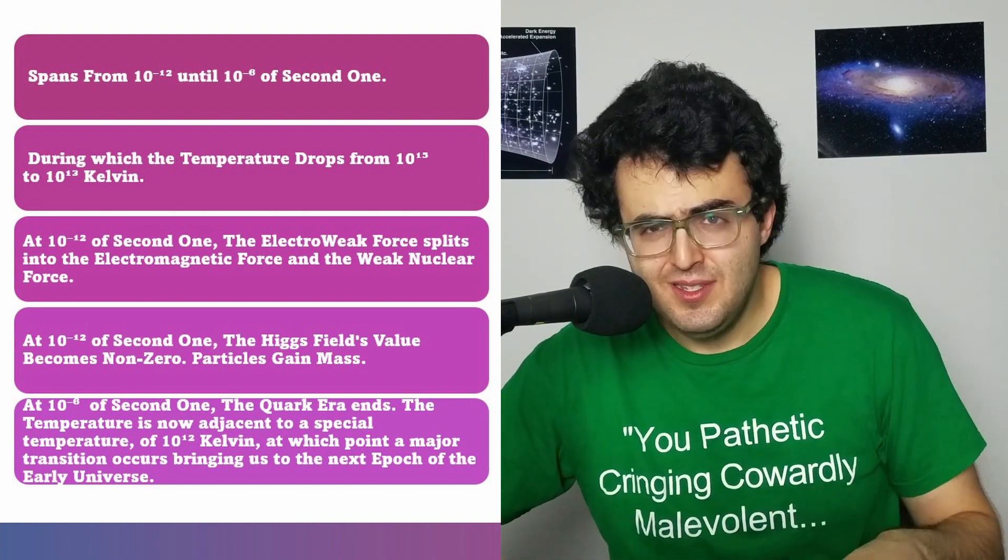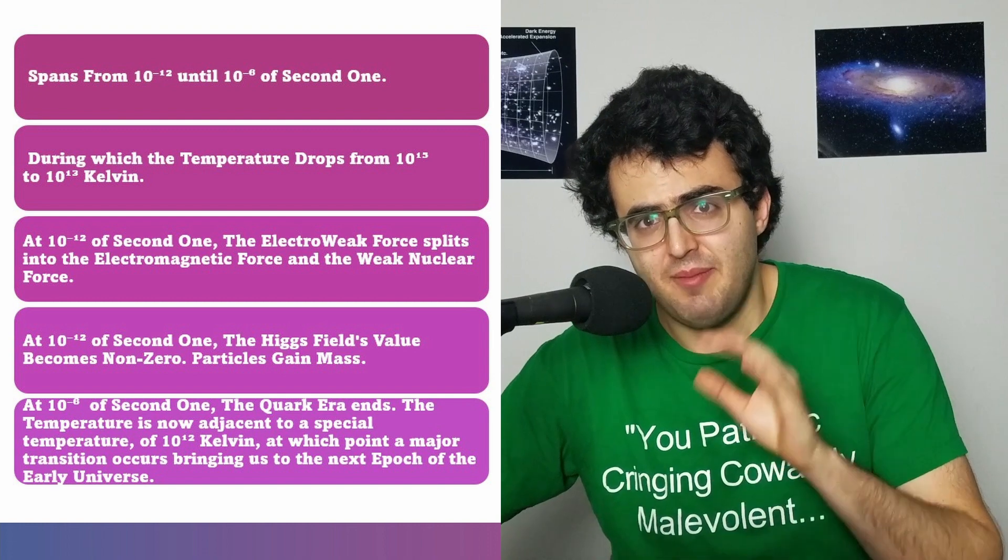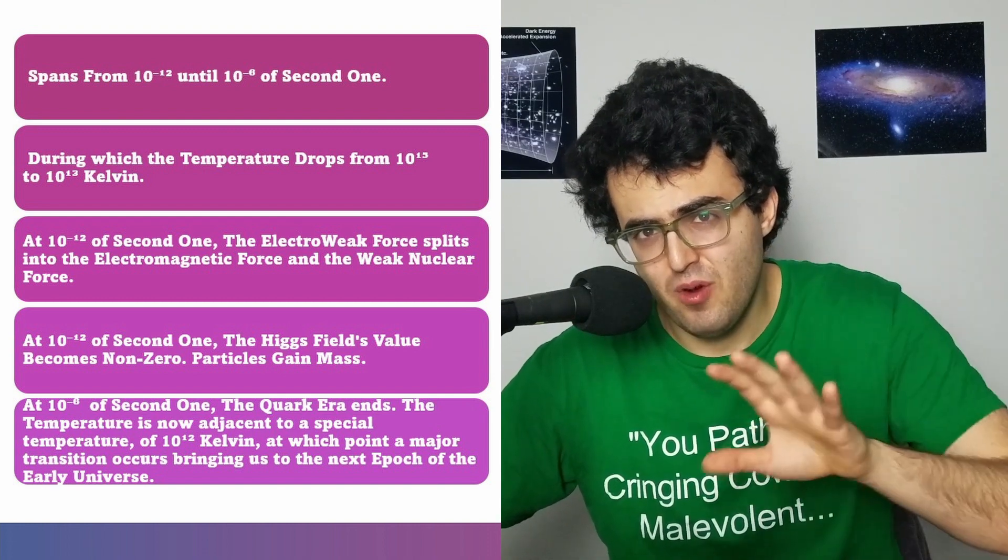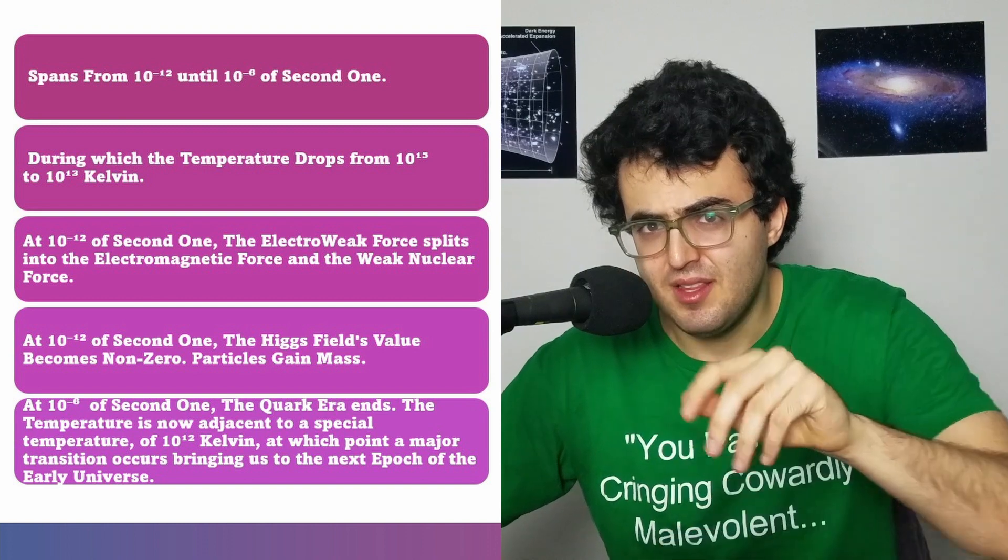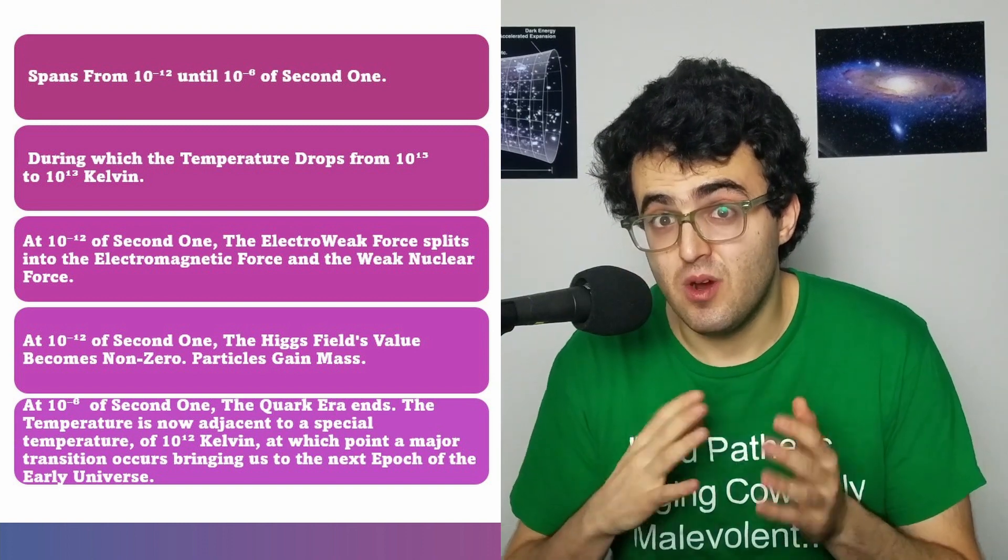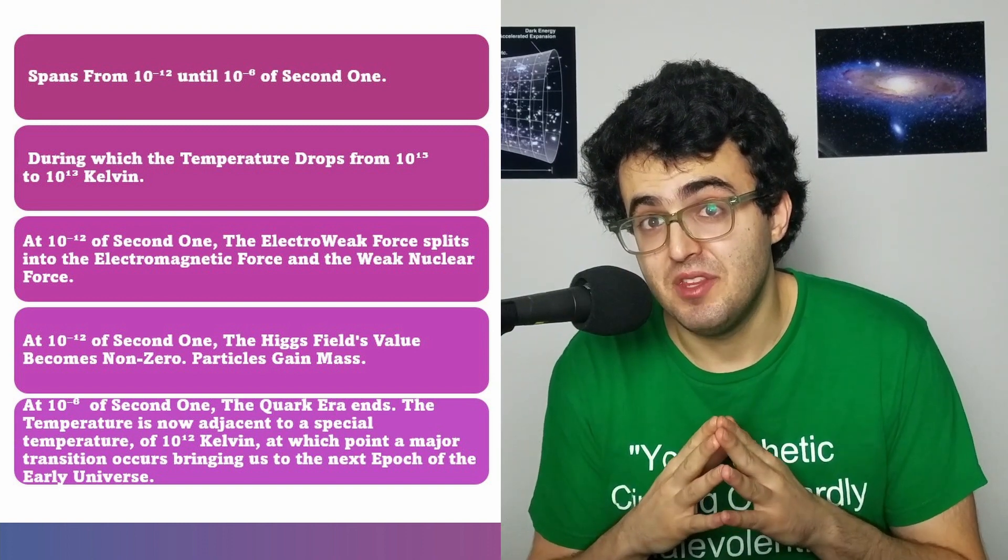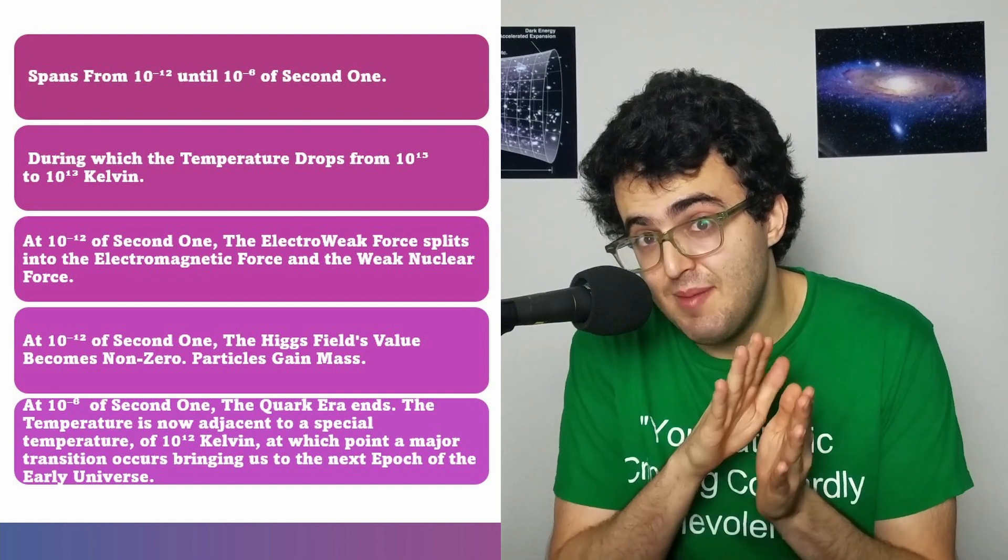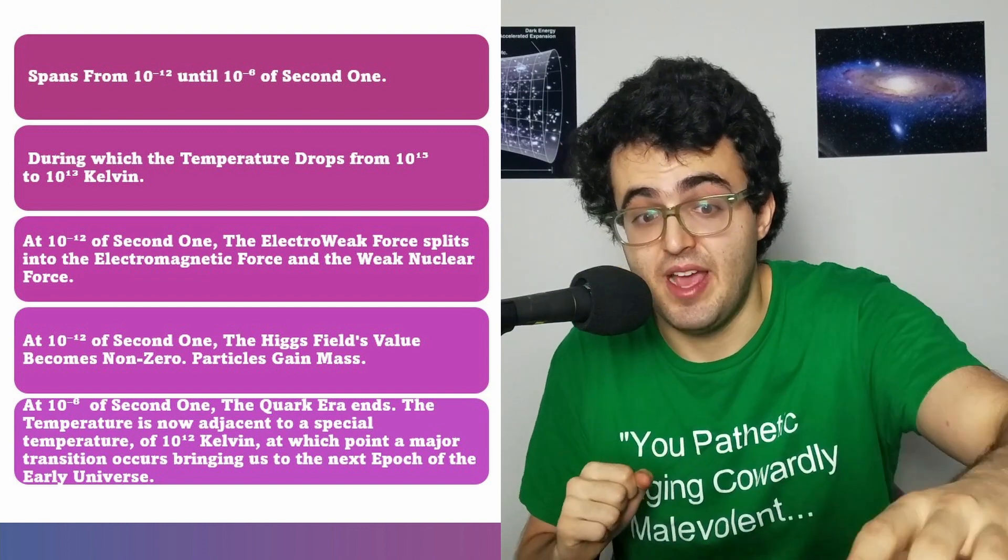The epoch closes at 10 to the minus 6 seconds when the temperature is at 10 to the 13 Kelvin, and at that point it's getting very near the temperature at which the quarks in this quark gluon plasma are going to start pairing up with each other and creating larger particles. But that's the beginning of the hadron epoch so we'll leave that for now.